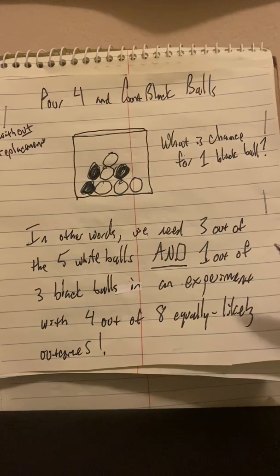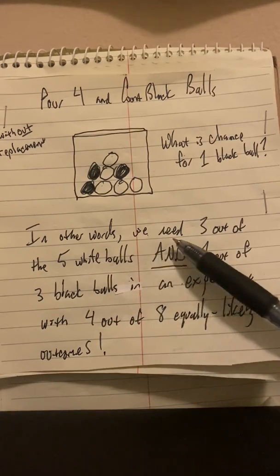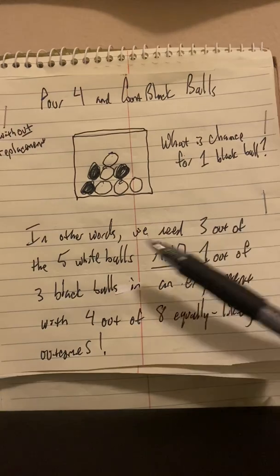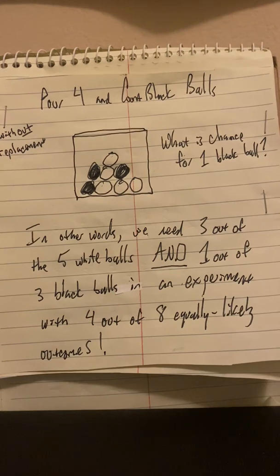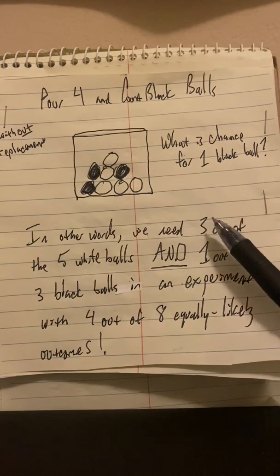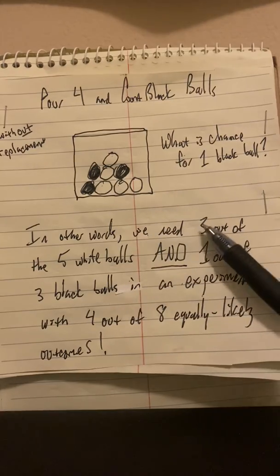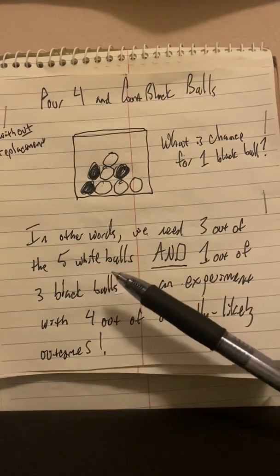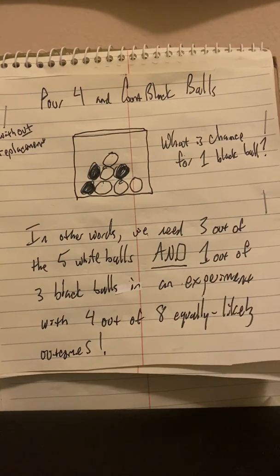In other words, when you solve this type of problem, in this particular case, we need three out of the five white balls and one out of the three black balls in an experiment with four out of eight equally likely outcomes. Now, if you're hearing the language, three out of five implies a combination of five choose three. One out of three implies a combination of three choose one. And four out of eight implies a combination of eight choose four.